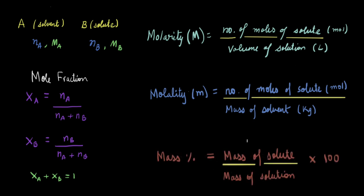Finally, we have mass percent, which is defined as the mass of the solute divided by the mass of the solution, multiplied by 100. The only thing to be careful of is that both masses should be in the same units. For example, if you have 10 grams of solute in 1 kg of solution, make sure both are in grams or both are in kilograms. These are the common concentration terms: mole fraction, molarity, molality, and mass percent.